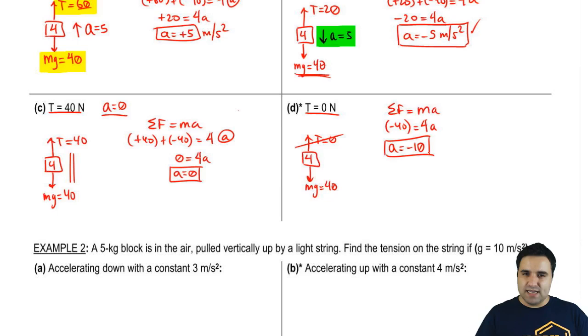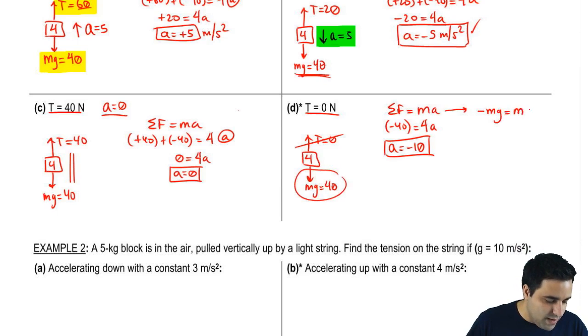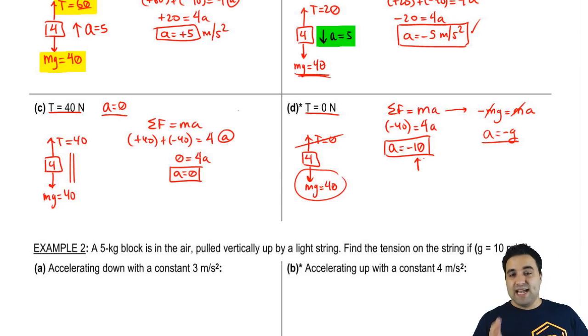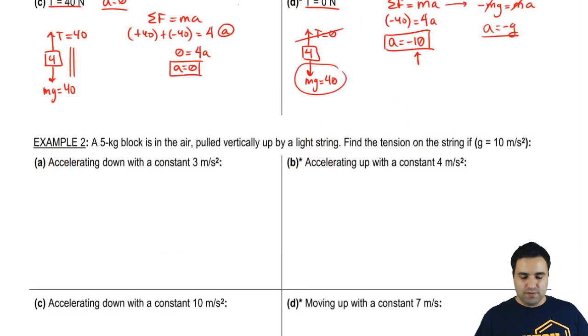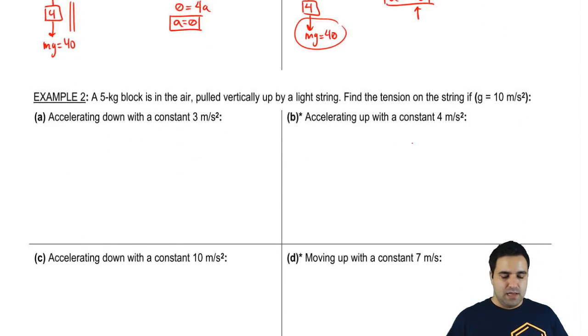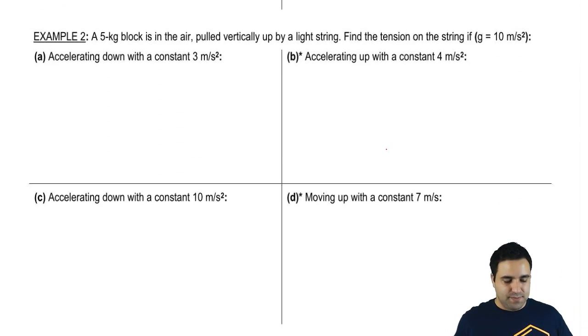This should make sense because if the only force is your mg, I get that negative mg equals ma, and acceleration is negative g. That's why I got a 10 because we're using 10 for gravity instead of a 9.8. Otherwise, this would have been a 9.8. So very simple, very straightforward, I think. It's going to get a little bit more complicated, but this is the beginning of it.